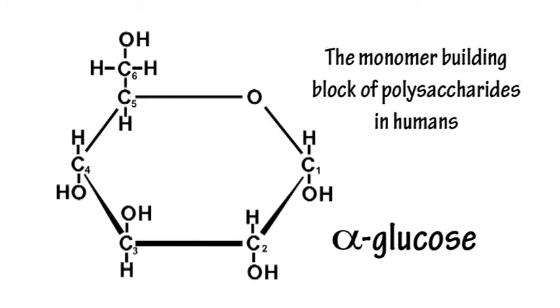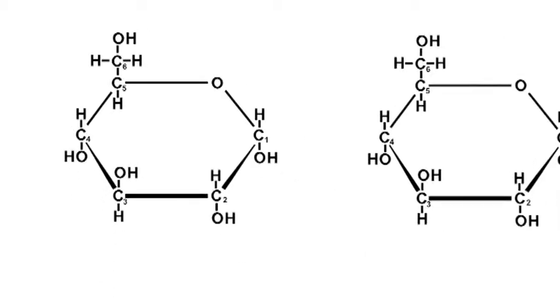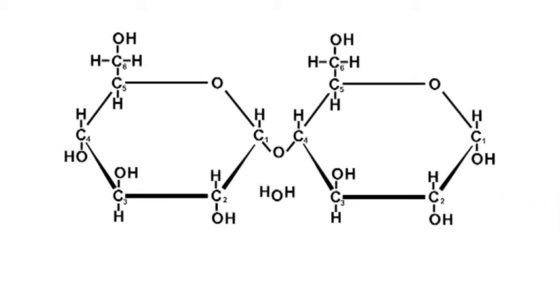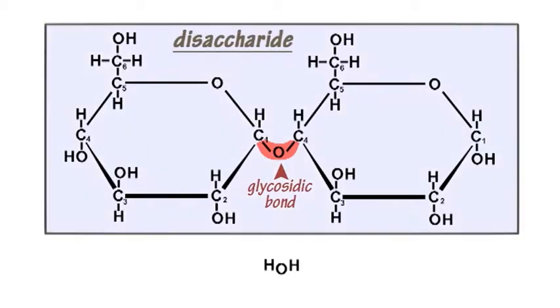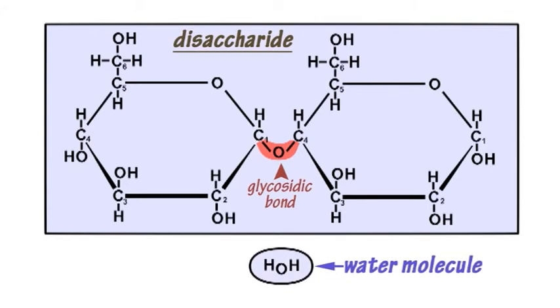The most important monomer building block in the formation of polysaccharides in humans is the monosaccharide sugar glucose. Two glucose molecules can be joined together by a glycosidic bond in a condensation reaction forming a disaccharide and a water molecule.